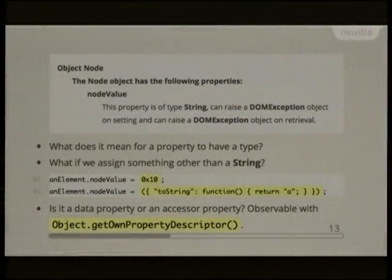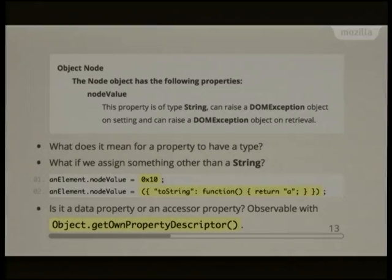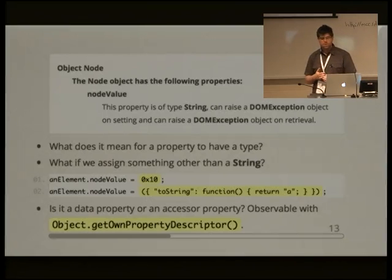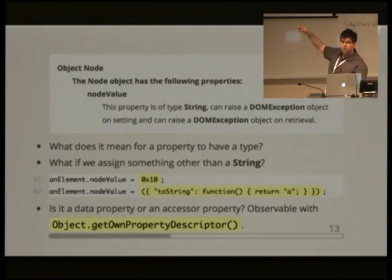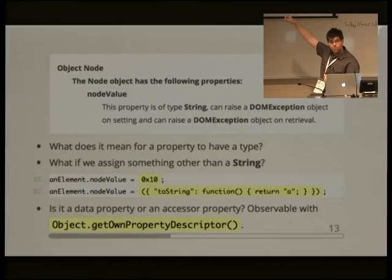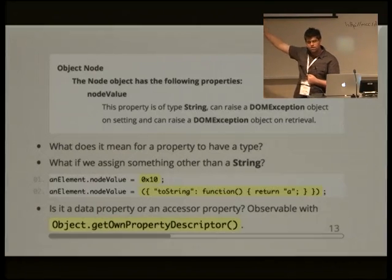For an attribute, the wording for nodeValue says it's a property of type string that can throw exceptions if you try to set bad values. But what does it mean for a property to have a type in JavaScript? Values have types, but properties can take on values of any type — there's no strict typing. What happens if you assign a number to it? Is it meant to be converted to a string? With what formatting? Should toString be invoked on an object when converting it to a string to assign to nodeValue?